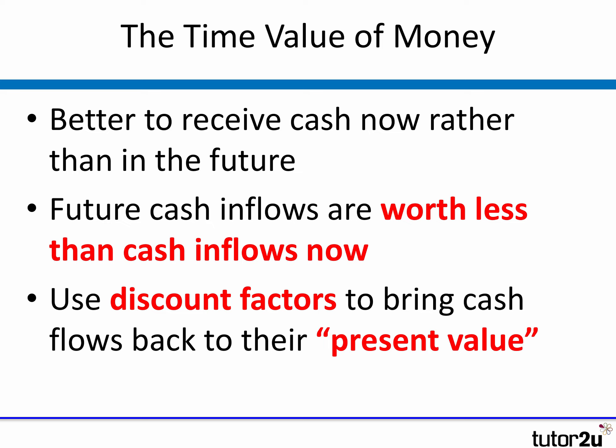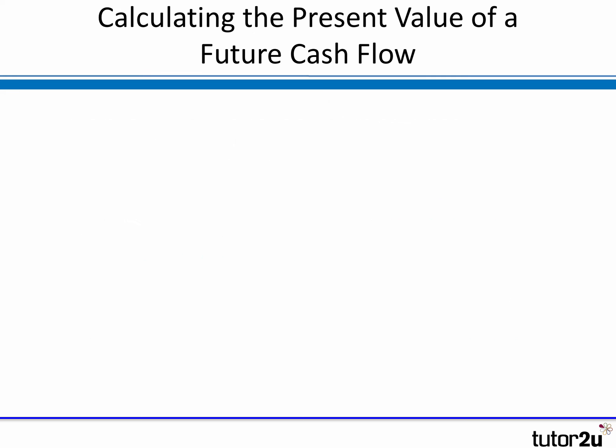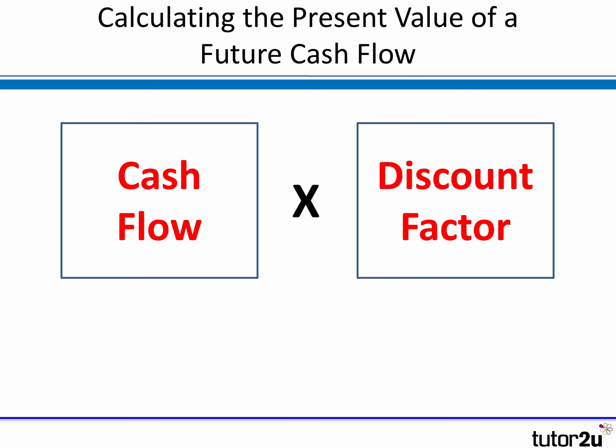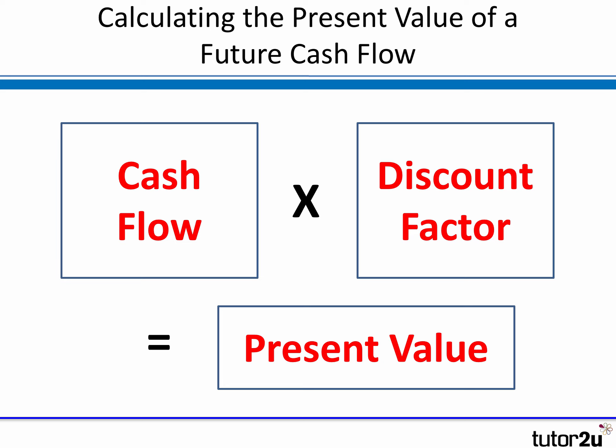We apply a discount factor, or DF, to bring the cash flows of future periods back to their present value. The calculation is simple: you take each cash flow and multiply it by the discount factor — usually given as a decimal rather than a percentage — and that equals the present value. So: cash flow times discount factor equals the present value.